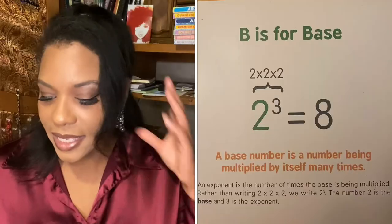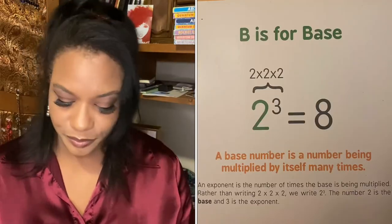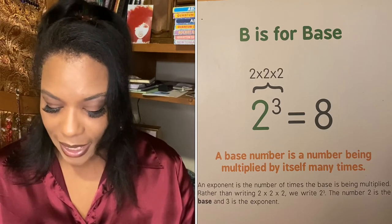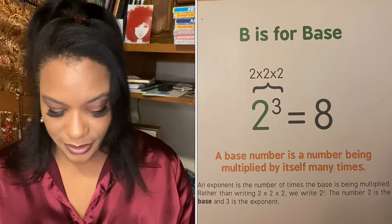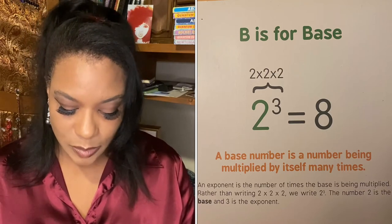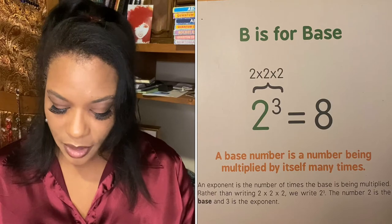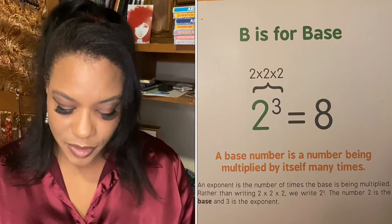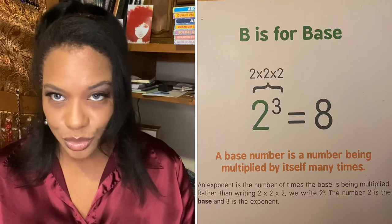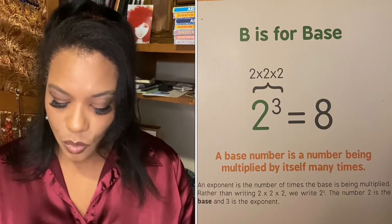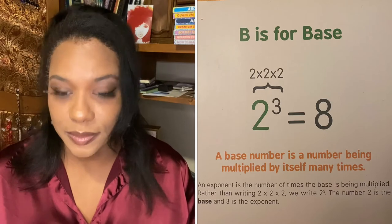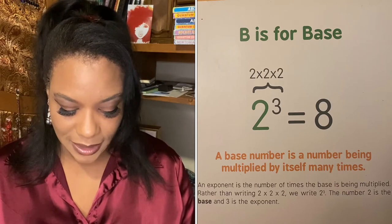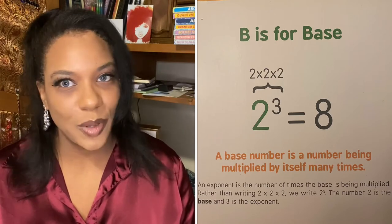B is for base. A base number is a number being multiplied by itself many times. An exponent is the number of times the base is being multiplied. Rather than writing two times two times two, we write two cubed. The number two is the base and three is the exponent.